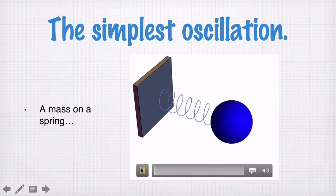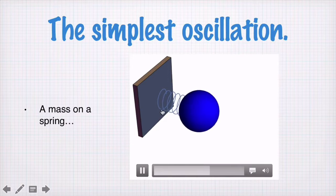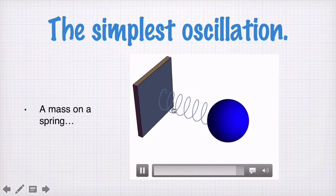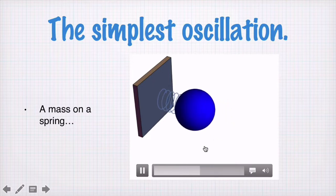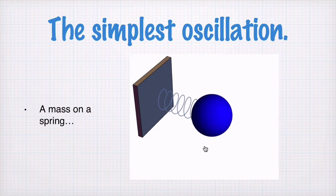To begin though, let's look at the simplest oscillation. This is a mass connected by a spring to some rigid support, and the mass goes backwards and forwards. This is something that you're probably intuitively familiar with. I want to identify here some of the key physics points that come out of this.